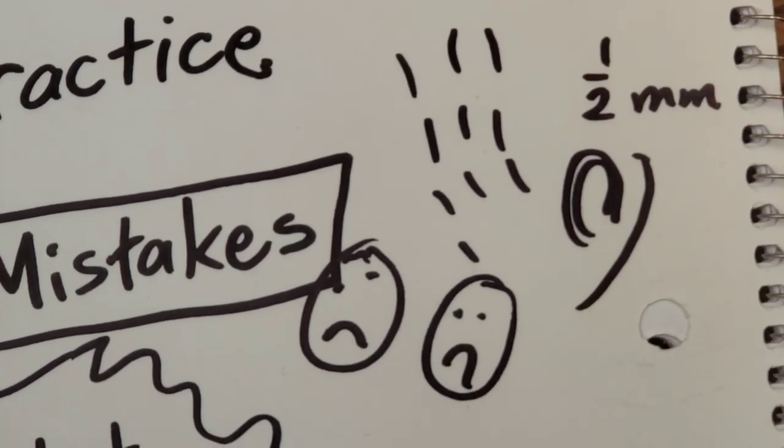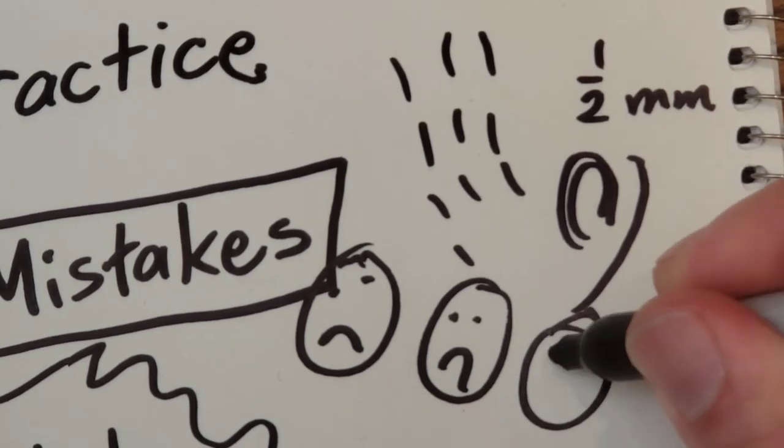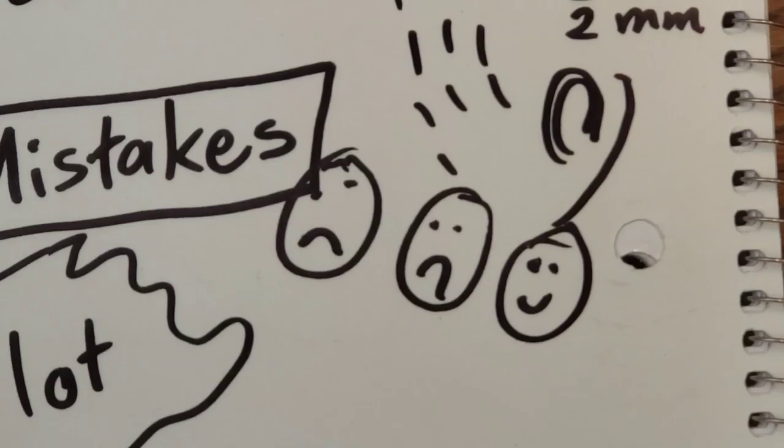Half a millimeter. That's how precise my eyes and my brain are now with certain pieces. But that's not stressful. That's a happy thing because I'm confident, because I've done it thousands of times.